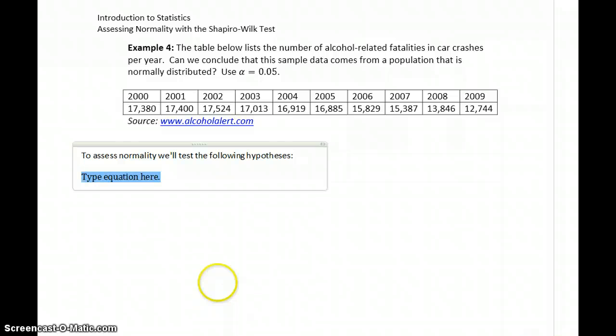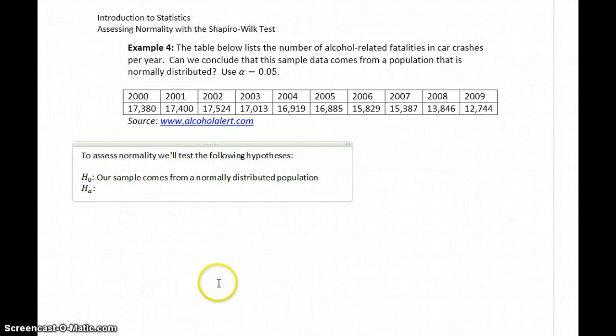The null hypothesis: our sample comes from a normally distributed population. The alternative hypothesis: our sample comes from a non-normally distributed population.